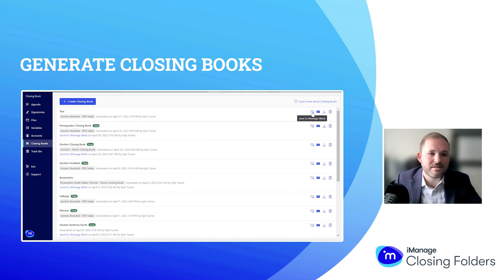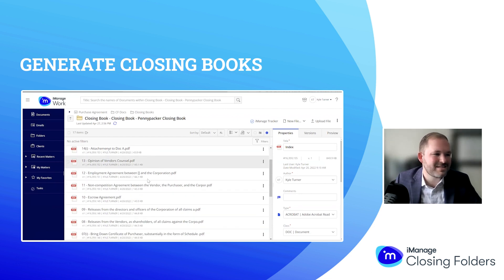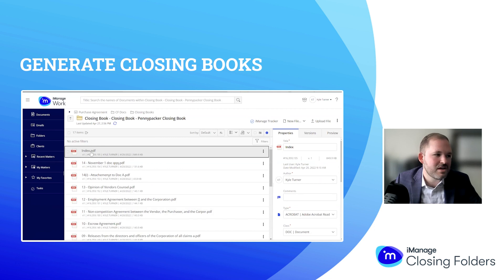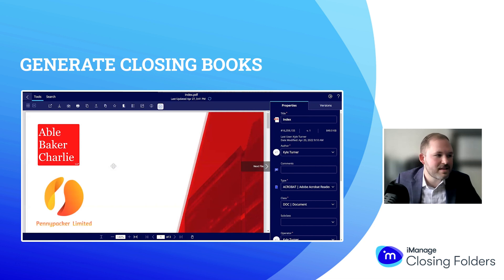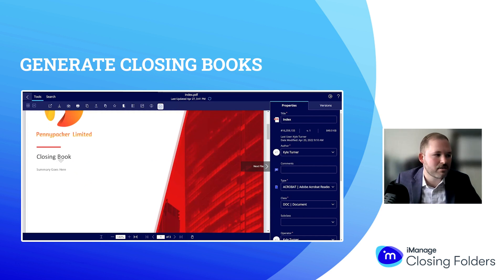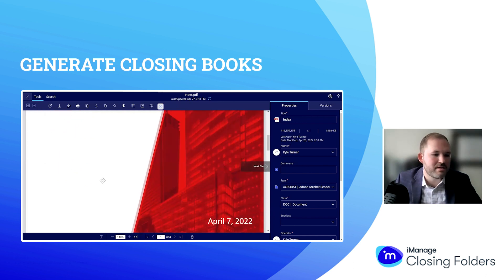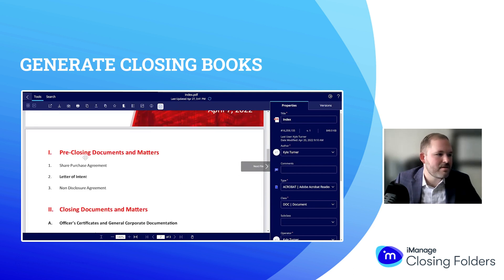If I click 'Save to iManage Work,' this is the view that I'll be getting. This is my firm's DMS — here is the deal itself with all of the contents. We have that index page that we let Closing Folders help us create. Your firm's name would go here, the client's logo if you wanted to add that would go here, we have the title of our deal, we could put a summary here, and then we have our closing date in the right-hand corner.